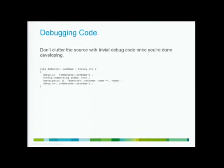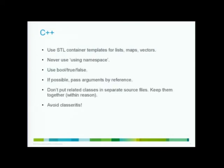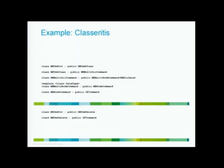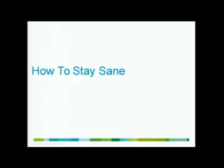Debugging code: when you're developing, you want debug code — great. But for Christ's sake, remove all the trivial stuff afterward. I mean, this is a one-liner function and there are three extra lines of debugging. Get lost. We are kernel hackers, we don't do C++, so I'm skipping that one. It's a lightning talk.